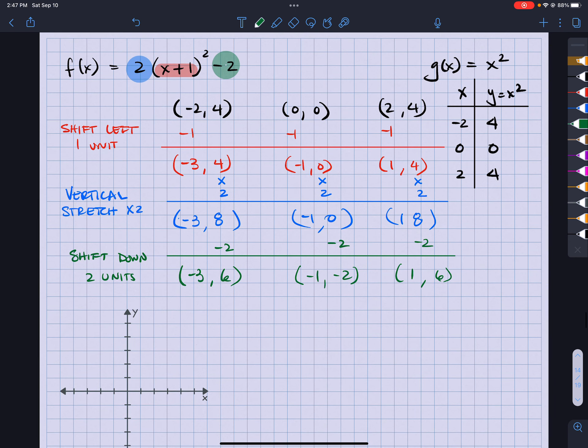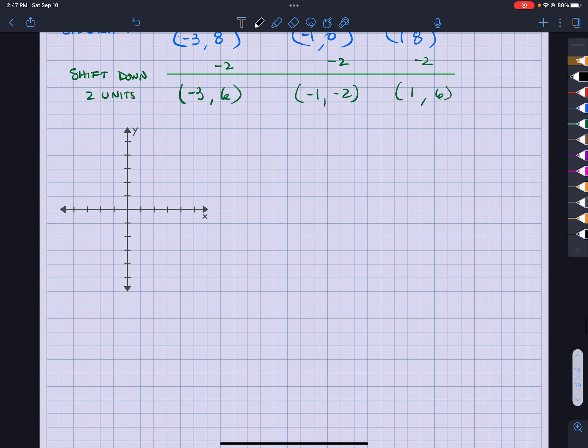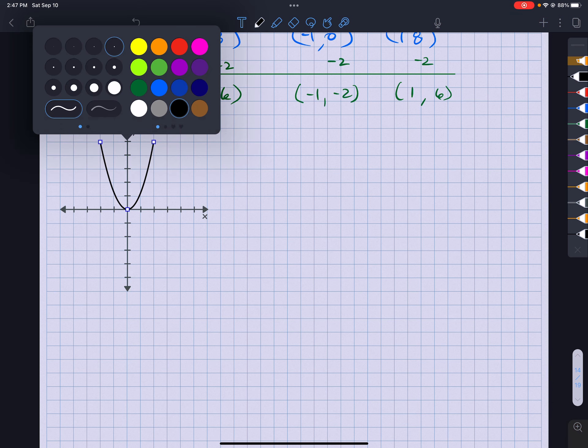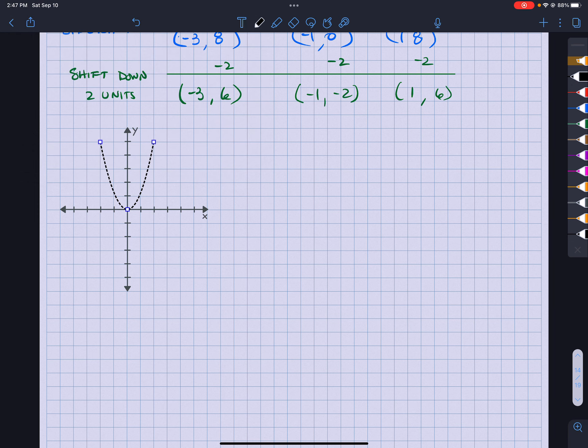So my original was x squared. I had 0, let me see, 2 was going to be 4. There we go. So that is the original. Let me go ahead and make this dotted. Alright. Then I'm going to select that, duplicate that.